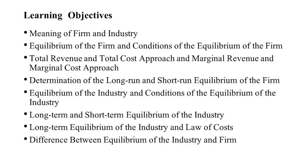The basic objective of this discussion is: we will discuss the meaning of firm and industry, then the equilibrium of the firm and the conditions of equilibrium. We will cover the total revenue and total cost approach, the marginal revenue and marginal cost approach, and the determination of long-run and short-run equilibrium of the firm and industry, including their conditions. We will also discuss long-term and short-term equilibrium of the industry and the law of cost.